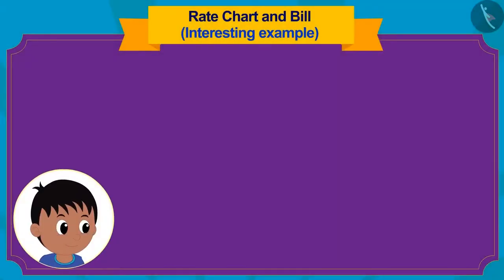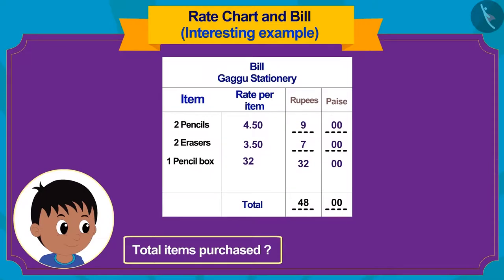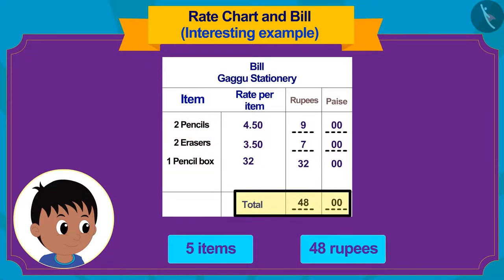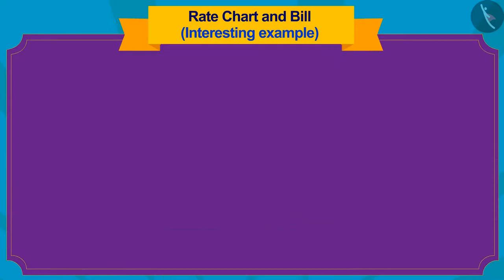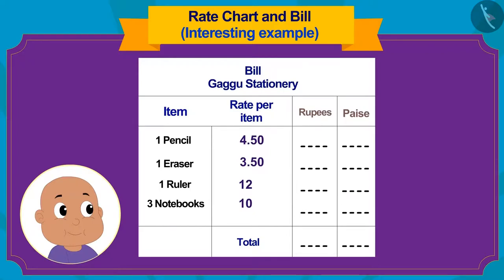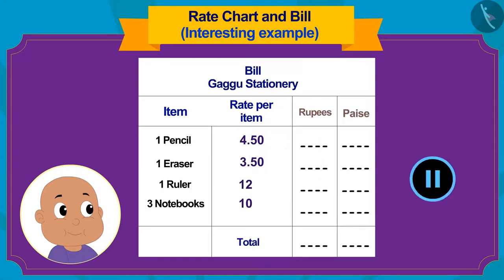In this way, how many items did Raju buy and in how many rupees? Yes! Raju bought a total of 5 items for 48 rupees. This is a bill for the purchased items of Bablu here. Can you complete it and find out whether Bablu bought less or more items than Raju, and how much money did he spend? If you want, you can pause the video and find the answer.